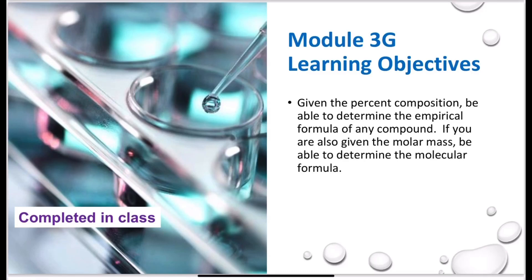So we've talked about molecules, how atoms are constructed, and naming different types of compounds. We need to start getting into being able to identify an actual formula from experimental data. To do this, we're going to look at percent composition, empirical, and molecular formulas. All of that will be defined momentarily.